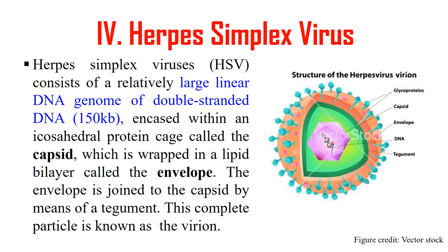Next, herpes simplex virus (HSV). It consists of a linear DNA genome of about 150 KB. It has an icosahedral protein case called the capsid, which is wrapped in a lipid bilayer known as the envelope. This envelope is joined to the capsid by means of the tegument, and the complete particle is known as the virion. We can also use HSV as a transfection method.